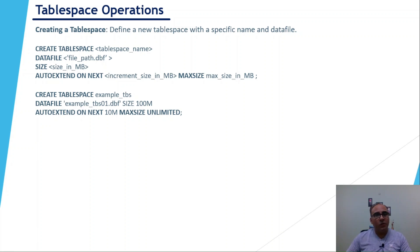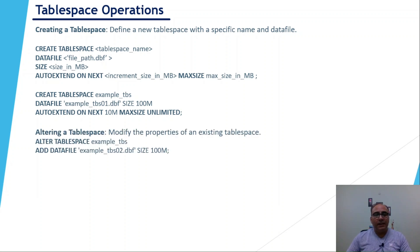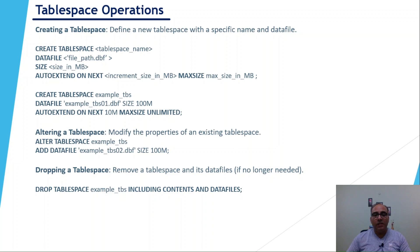To alter a tablespace, use the ALTER TABLESPACE command followed by the tablespace name and ADD DATAFILE if you want to add a new data file to an existing tablespace. To drop a tablespace, use DROP TABLESPACE with the tablespace name, and include INCLUDING CONTENTS AND DATAFILES to remove all things related to that tablespace.